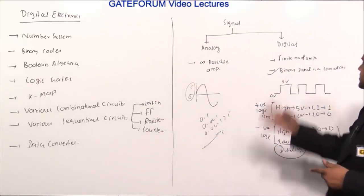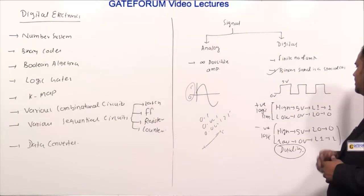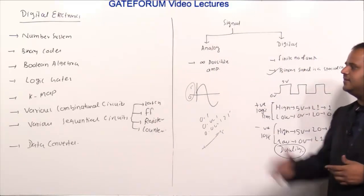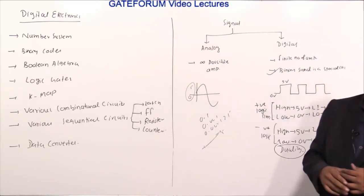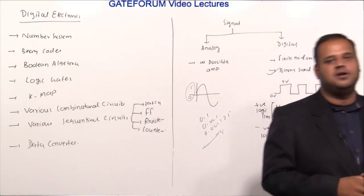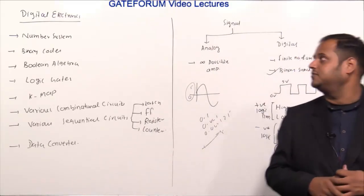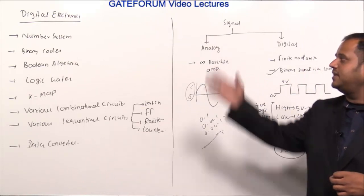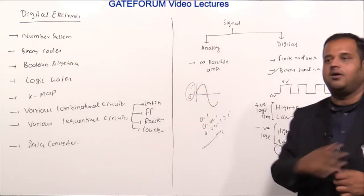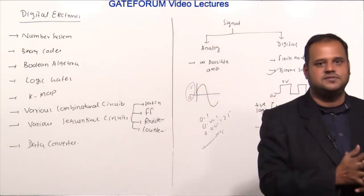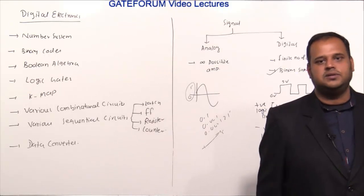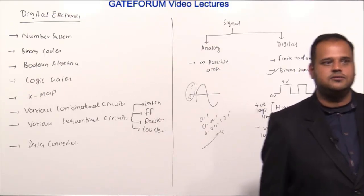So this is analog signal, this is digital signal, positive logic systems, and these are the contents. In the next video we are going to start with number systems, followed by all the subsequent chapters. Thank you for watching the video, see you in the next video.